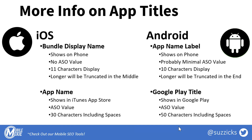Now in iOS, there is also something called the bundle display name, and this is what shows up on the phone under the app icon. This is known to have no ASO value. It's 11 characters, and after that it'll be truncated — and it actually gets truncated on iOS in the middle.